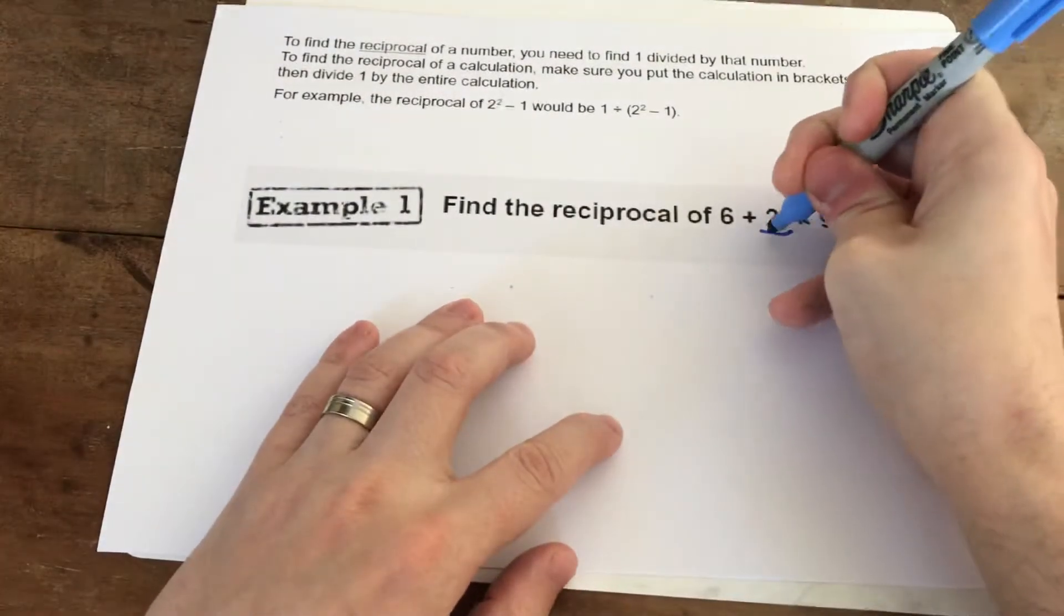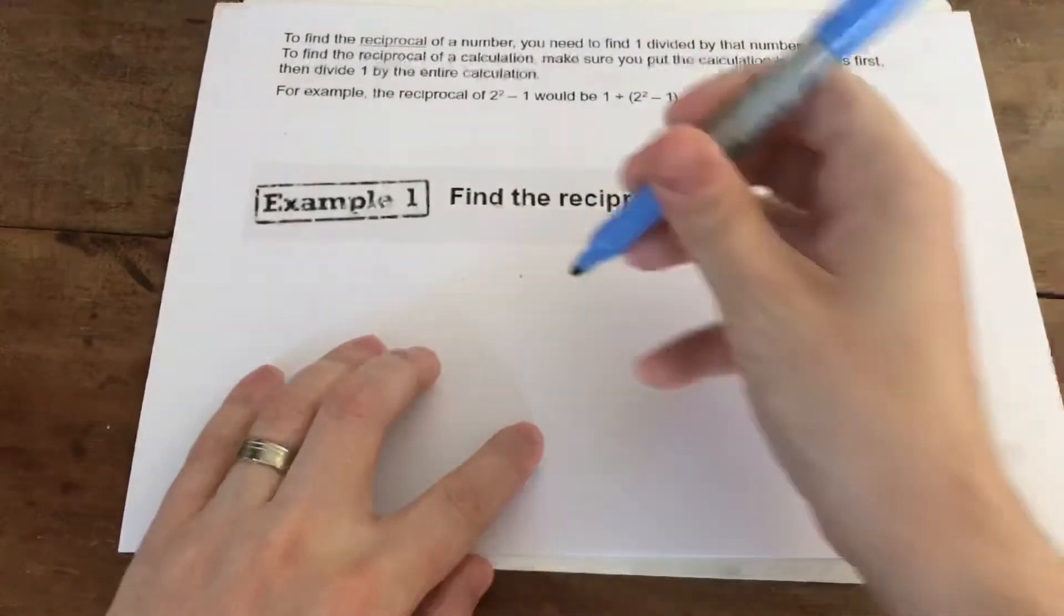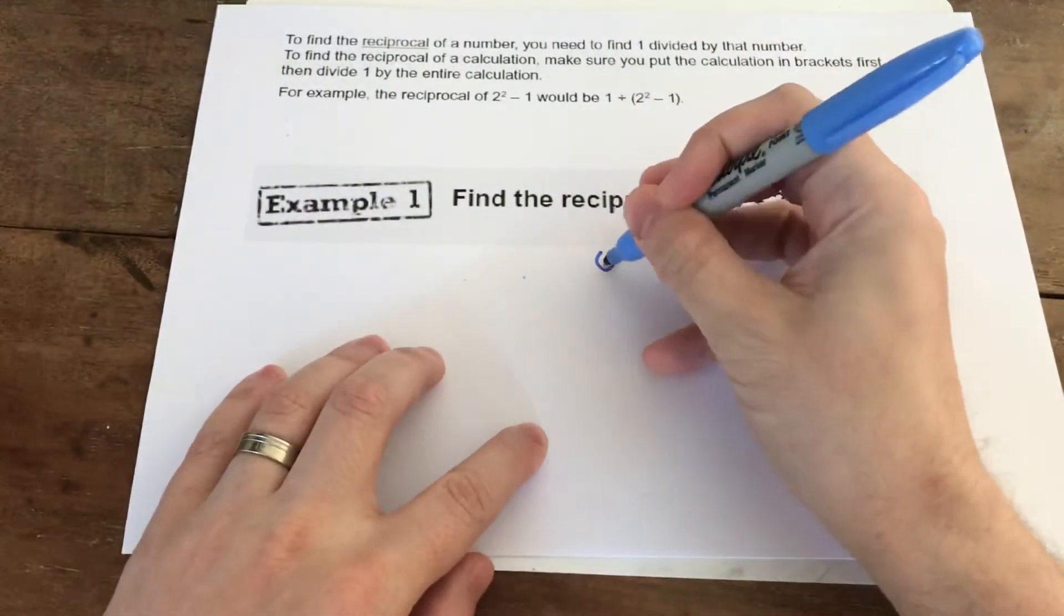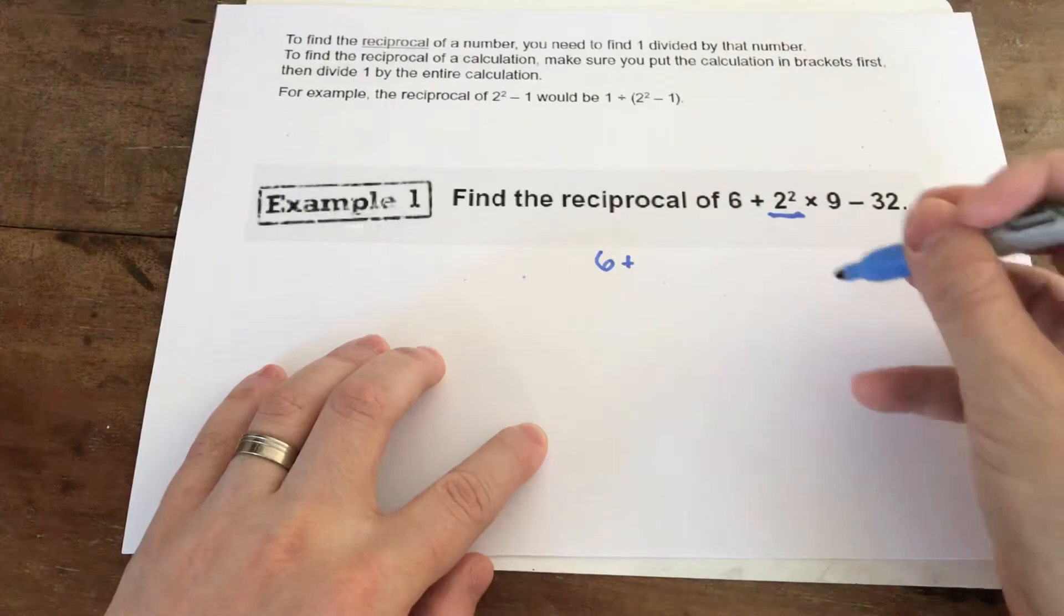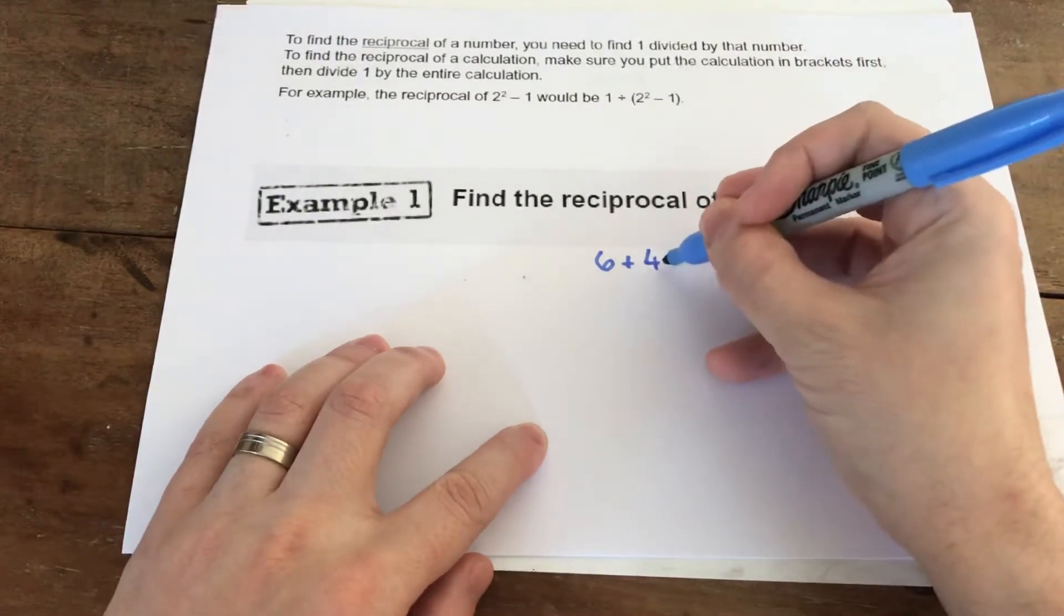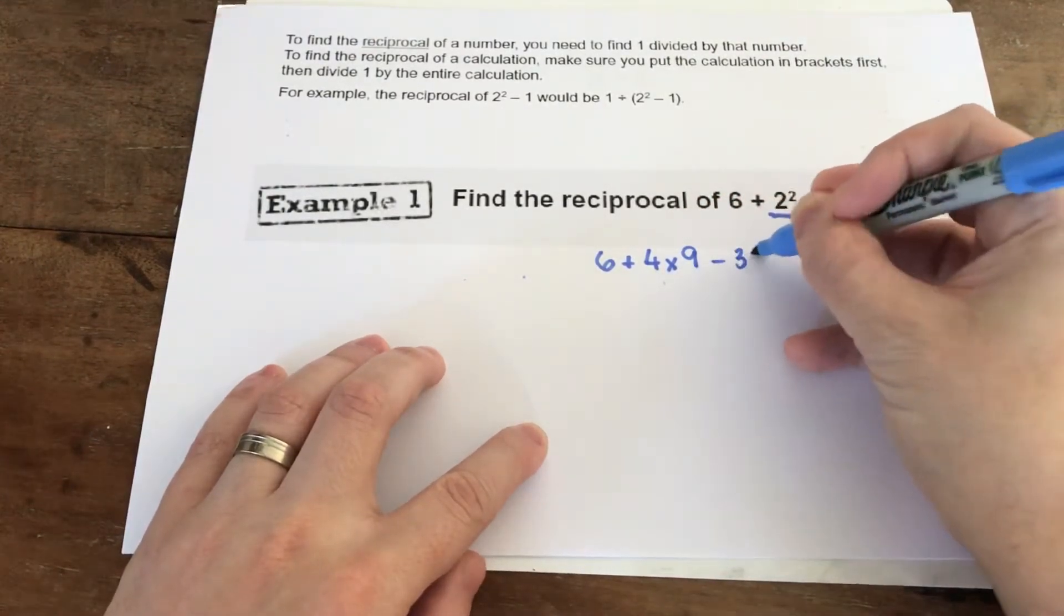So what I would do is I'd work out that calculation. So 2 squared is 4, so I'd have 6 plus 4 times 9 minus 32.